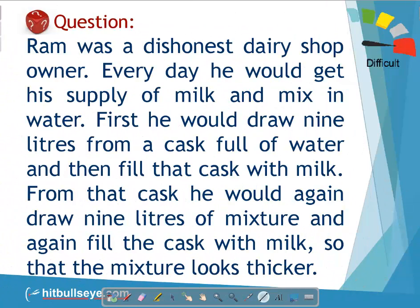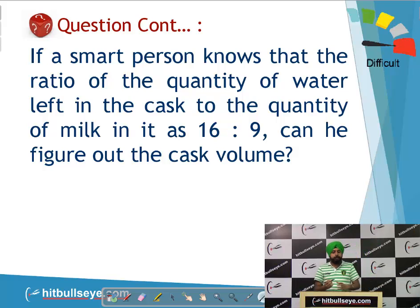Now here is a question talking about a dishonest dairy shop owner who starts putting milk into a container consisting of water. He would withdraw 9 liters and replace with milk, and every time he will keep on doing that. After that, finally a smart person comes to know of that, and at that time the ratio is given to be 16 is to 9. Now how do we solve that question?